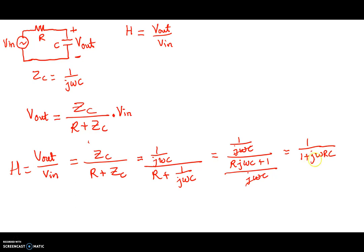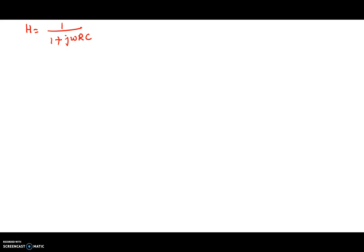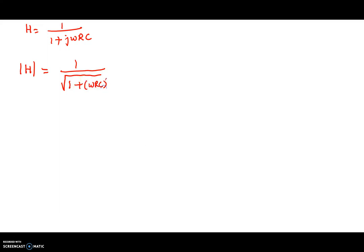This transfer function is complex — there's a j here — so it has both a magnitude and an angle. The magnitude of H is equal to 1 over the square root of 1 squared plus (ωRC) squared. This is because the function is of the form p + jq, and the magnitude of p + jq is the square root of p squared — which is 1 — plus q squared, which is (ωRC) squared.